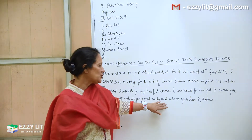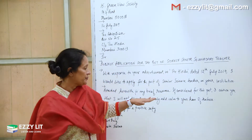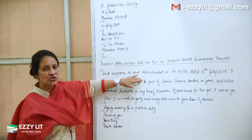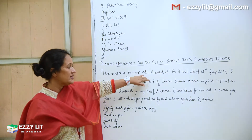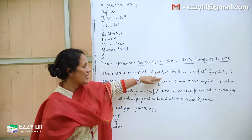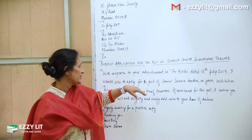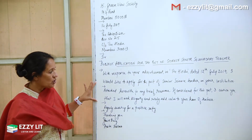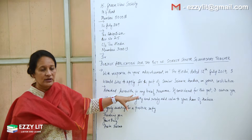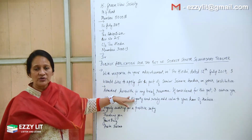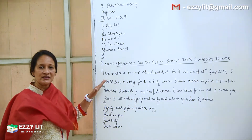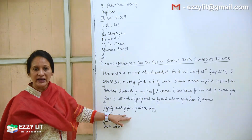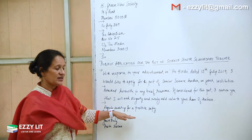Then the next paragraph: 'Attached herewith is my brief resume. If considered for this post, I assure you that I will work diligently — sincerely, in a hard-working way — and surely add value to your team of teachers.' In your first paragraph you state where you got the information about the vacancy, including the name of the paper and the date, and for what position you are applying. The second paragraph talks about what you are enclosing — your resume, qualifications, marital status, and so on. Then leave a line and write 'Eagerly awaiting a positive reply' or 'Eagerly awaiting in anticipation.'